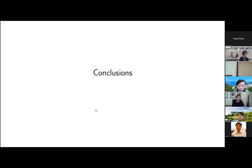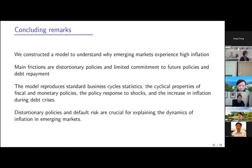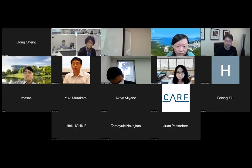To conclude, we construct a model to understand why emerging markets experience high inflation, particularly in times of financial distress. The key frictions are distortionary policy and limited commitment to future policies and debt repayment. The model reproduces standard facts and facts about inflation and depreciation. We show it's crucial to have distortionary policies — with lump-sum taxes you can't even address this — and also important to have default risk, as the effect would be much smaller without it. Let's move on to Dr. Min-Jie Teng from Simon Fraser University for the discussion.